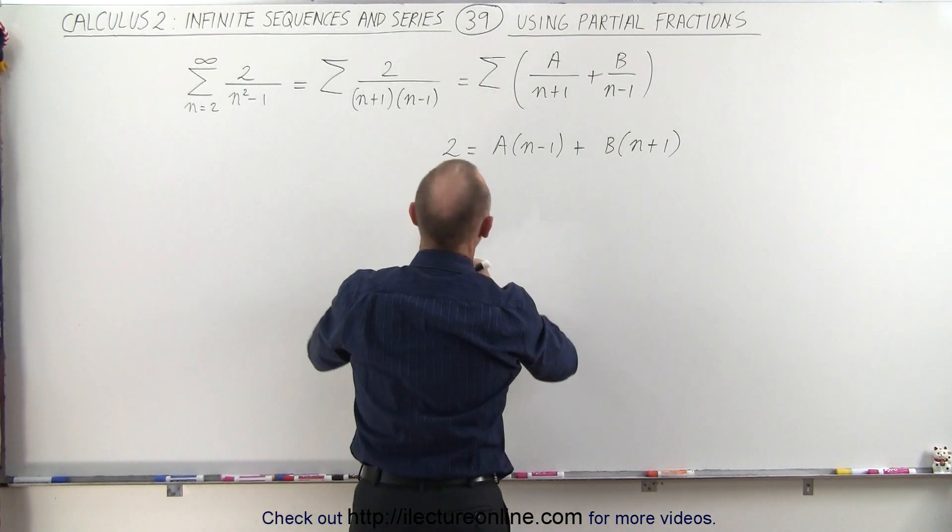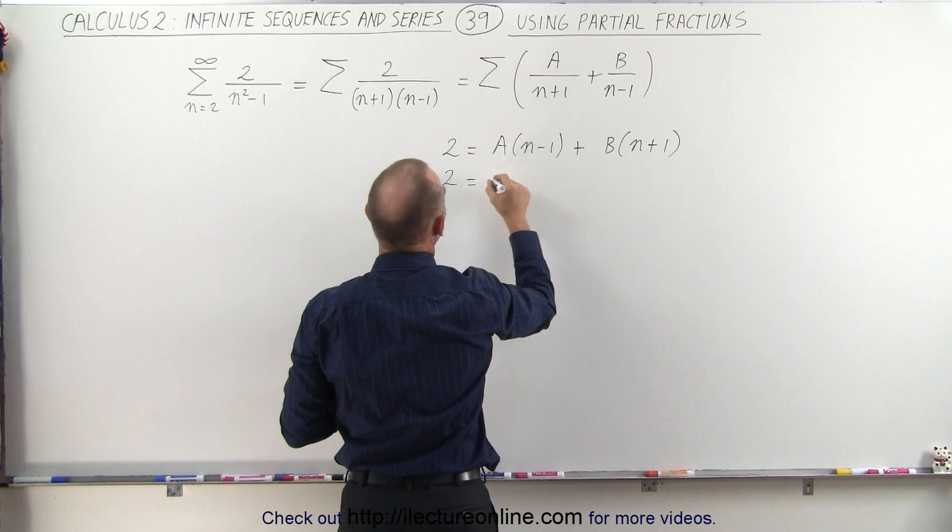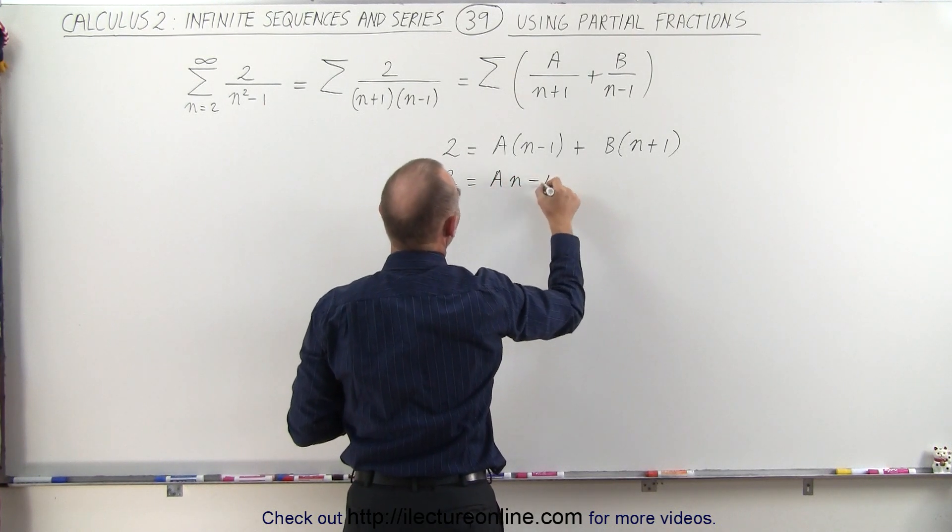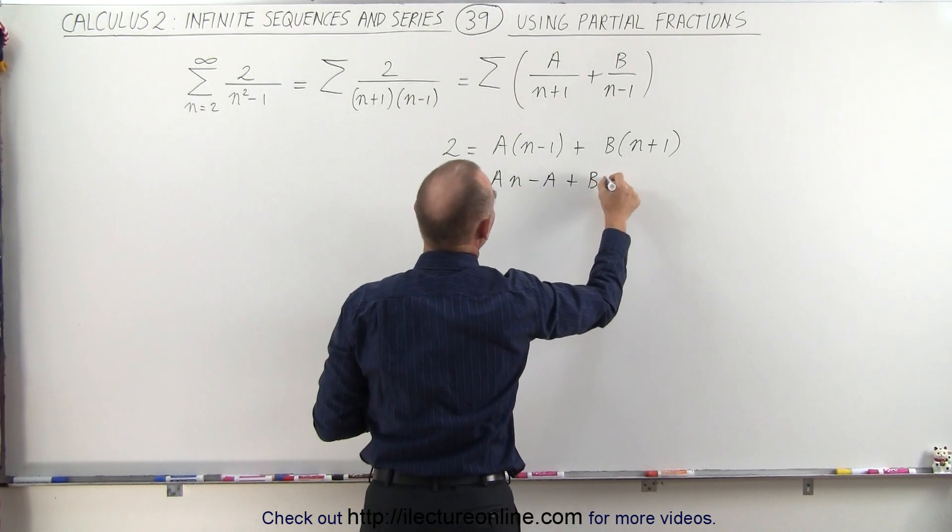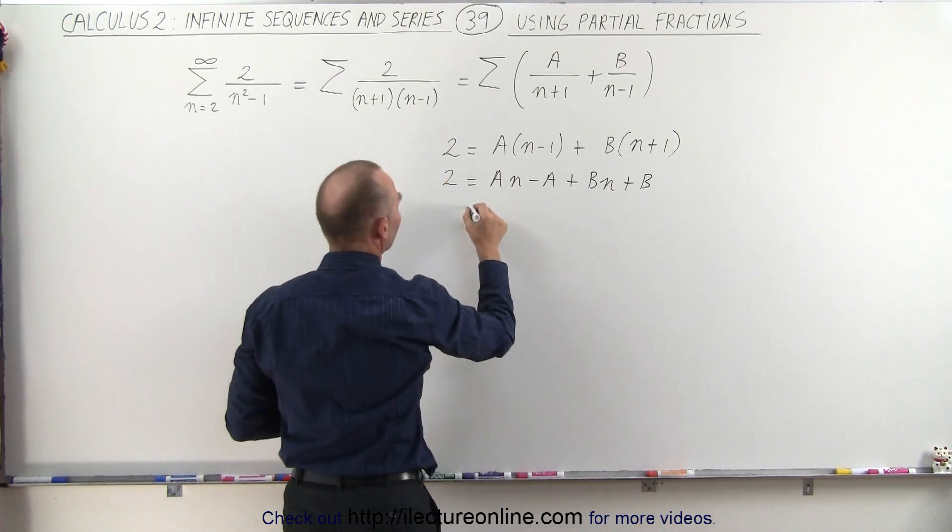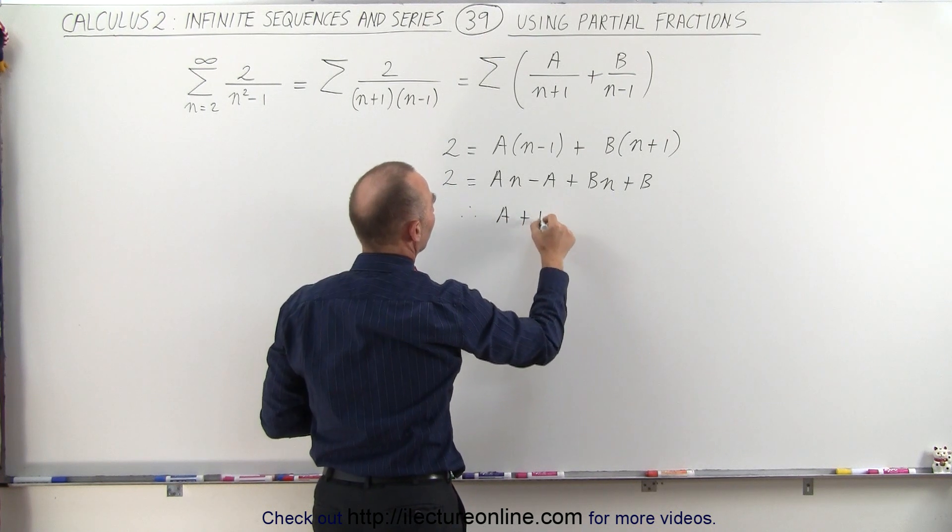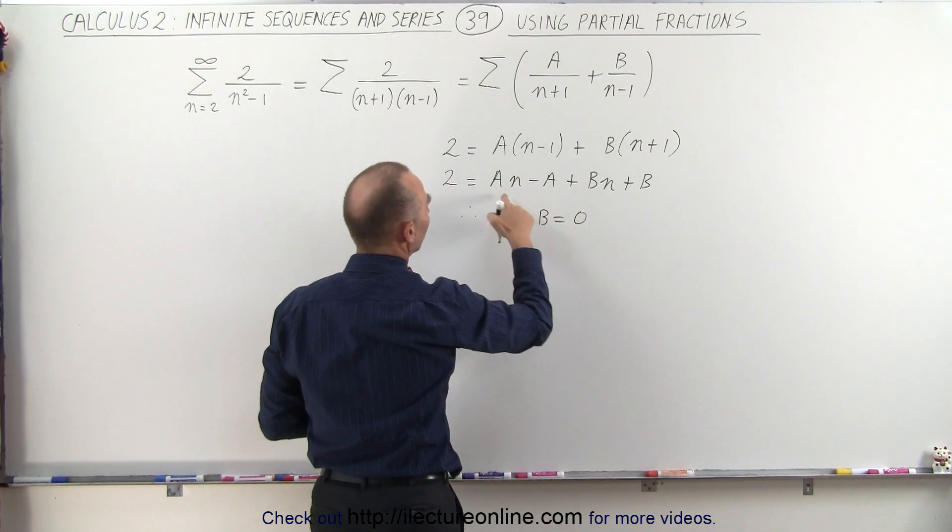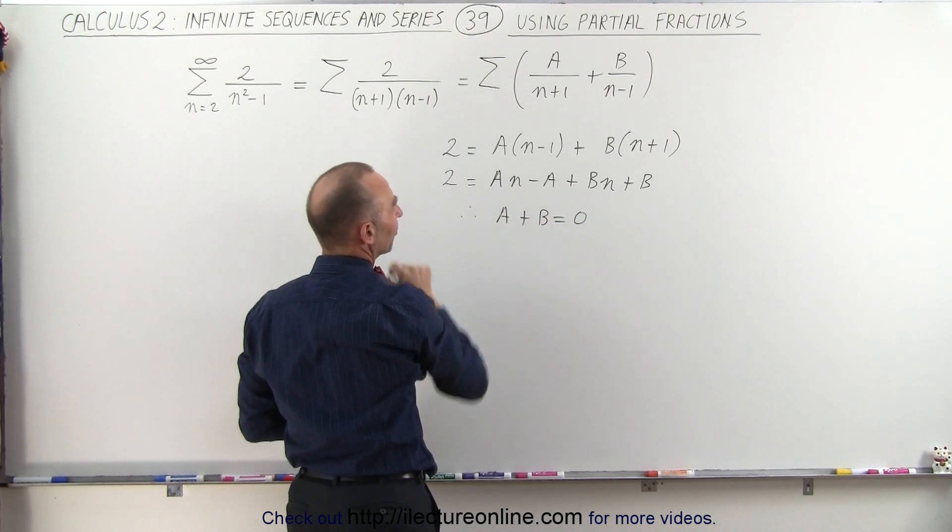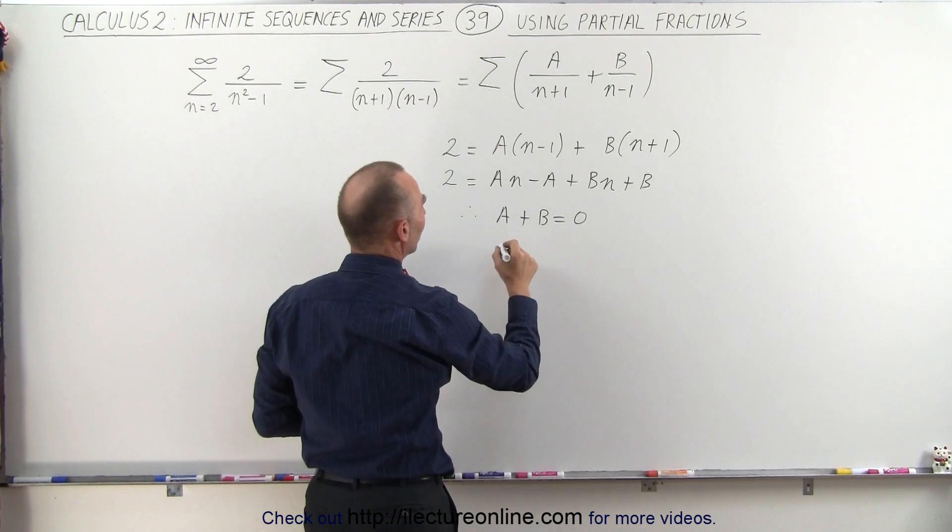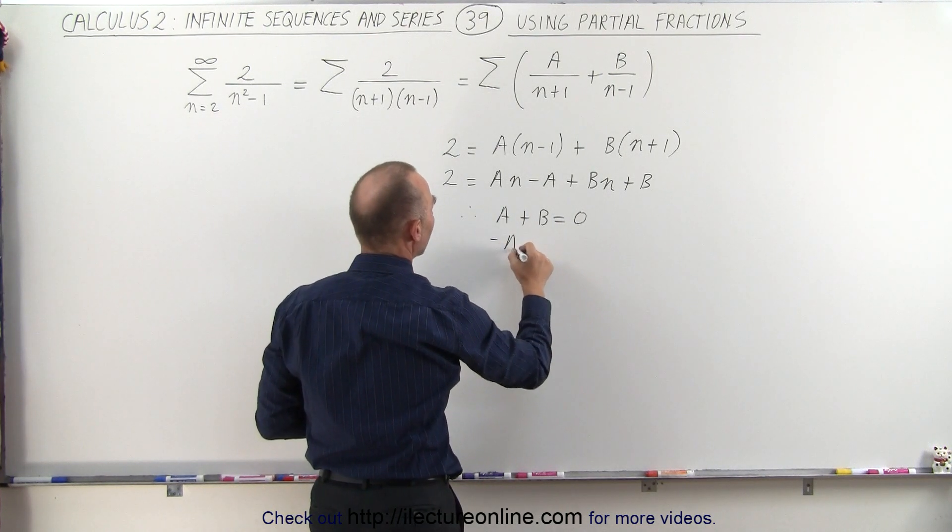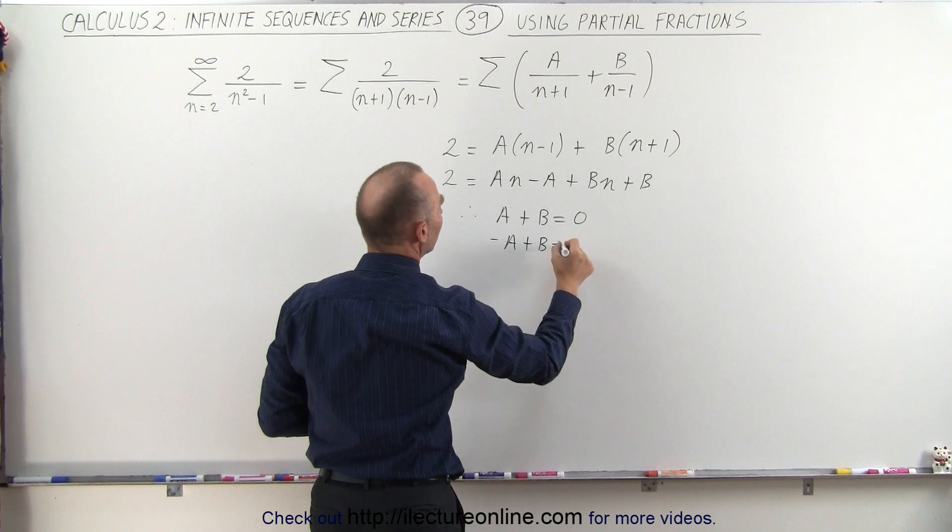Notice, if we write this out, we can say that 2 is equal to a times n minus a plus b times n plus b. And from that, we can conclude that a plus b must equal 0, because there's no n counterpart in the left side of the equal sign. And we can say that minus a plus b is equal to 2.